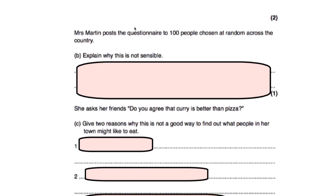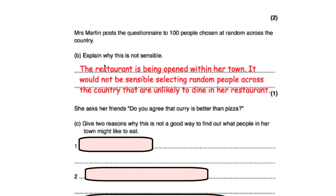Mrs. Martin posts the questionnaire to 100 people chosen at random across the country, and we're asked to explain why that's not sensible. Mrs. Martin wants to find out what people in her town like. If she's posting to 100 random people across the country, she'd be very lucky if any of those questionnaires are received by people in her town. It wouldn't be sensible selecting random people across the country who are unlikely to dine in her restaurant.